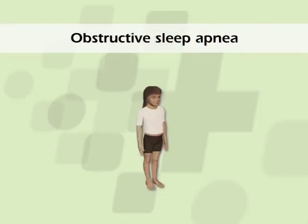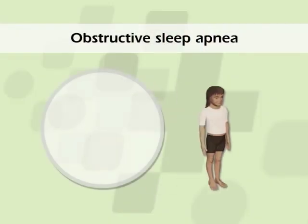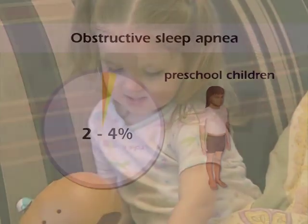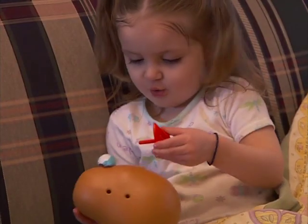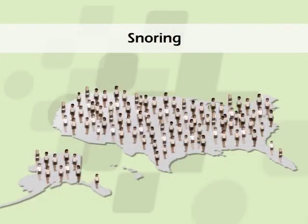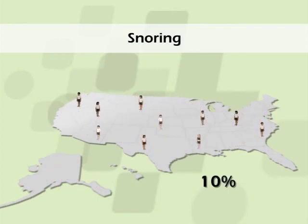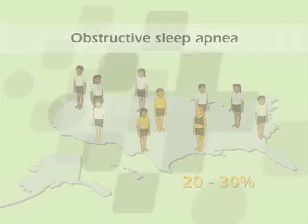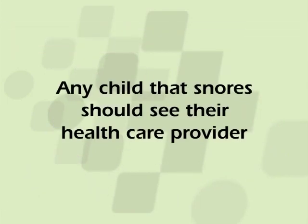Obstructive sleep apnea is a serious condition that affects two to four percent of preschool children. It is most common between the ages of two to seven, but can affect infants and adolescents as well. About ten percent of children snore, and of those children, twenty to thirty percent will have obstructive sleep apnea. Any child that snores should see their health care provider.